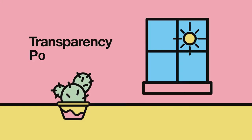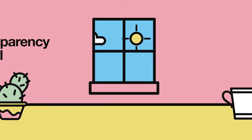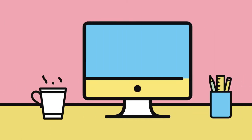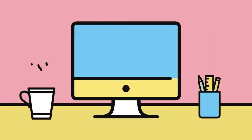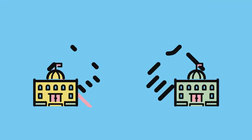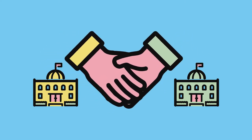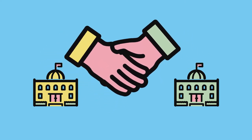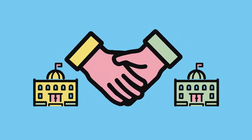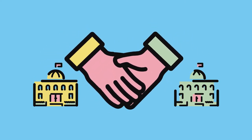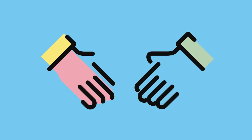Barcelona Provincial Council has created the Transparency Portal with the aim of sharing the Council's public information. This information derives from the Entity's activities and from cooperative relations with other administrations.